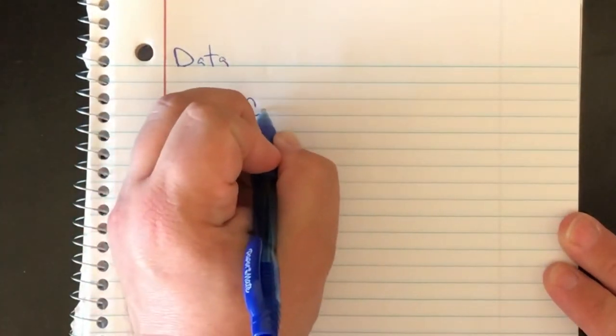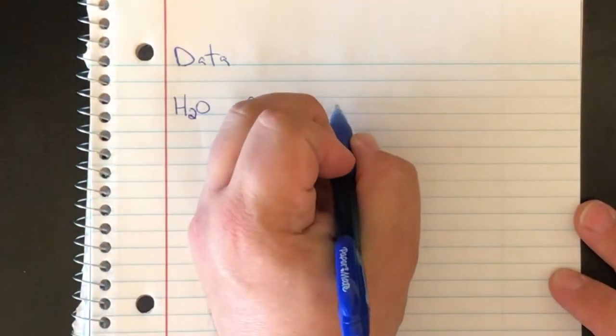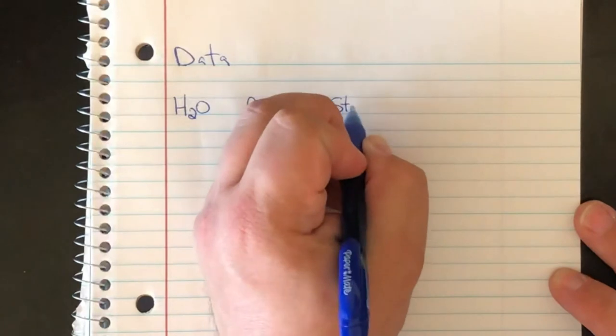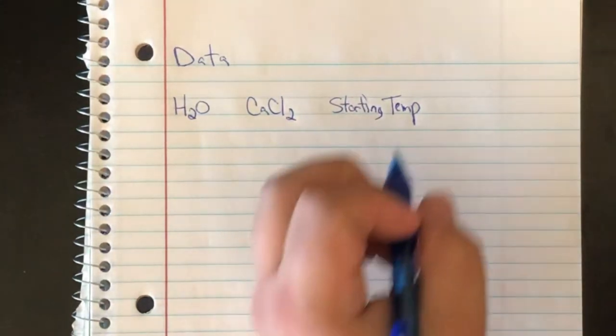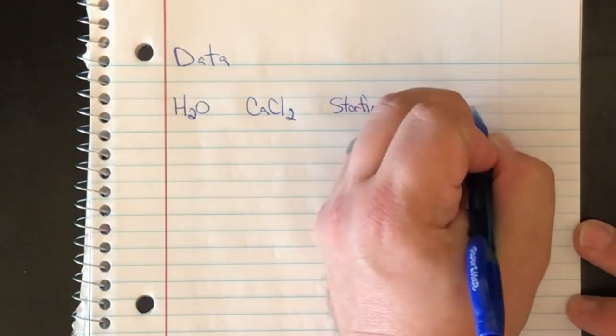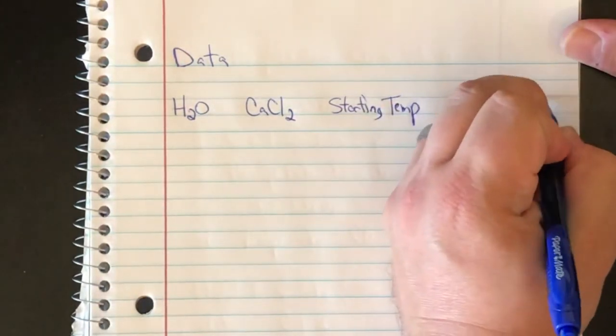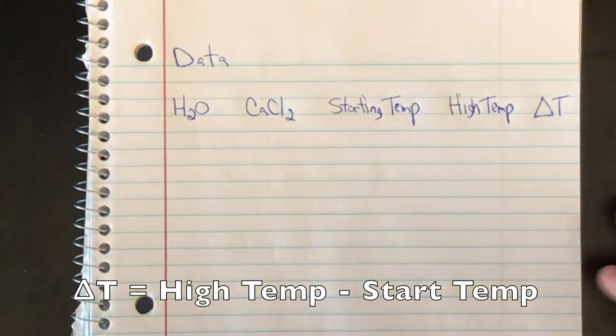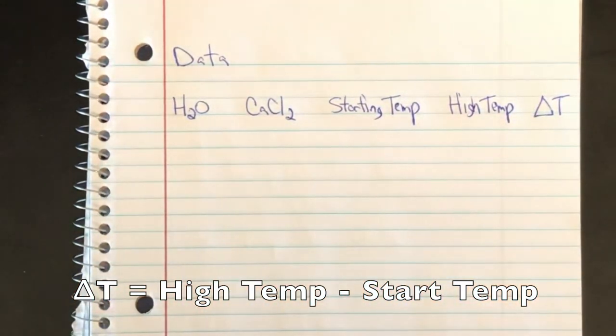And then it's time for the data table. Now in this data table, you're going to write down the amount of water, the amount of calcium chloride, you're going to write the starting temp and the highest temp, and then a thing that we call delta T. So delta in science and math means change. So delta T is the change in temperature.